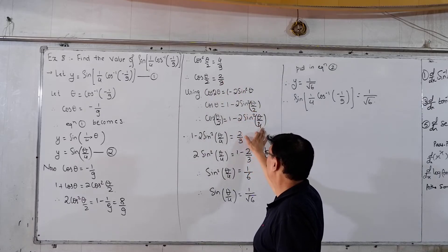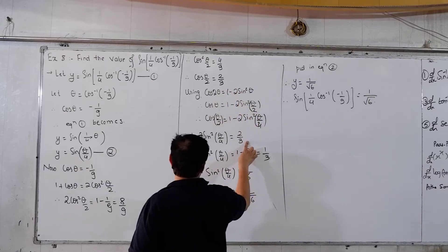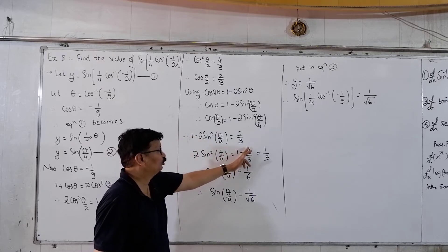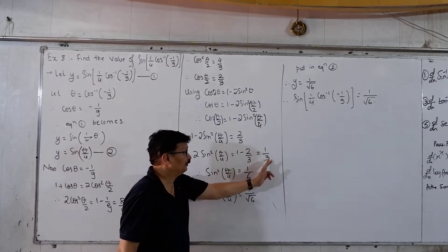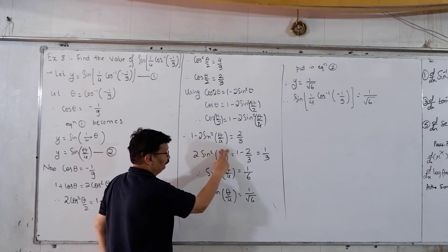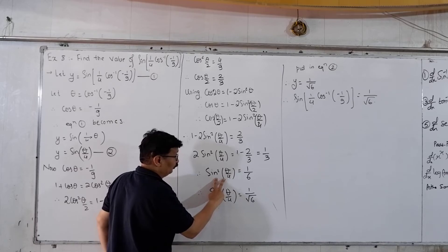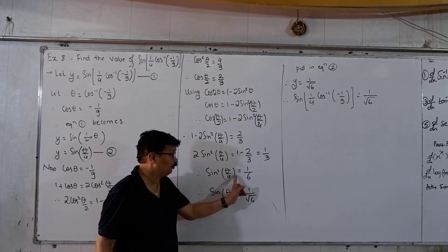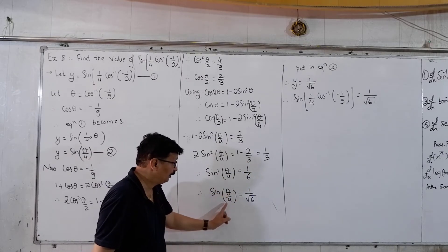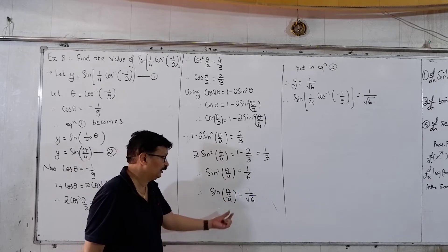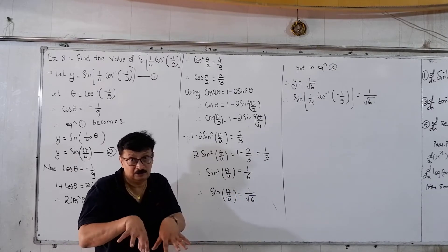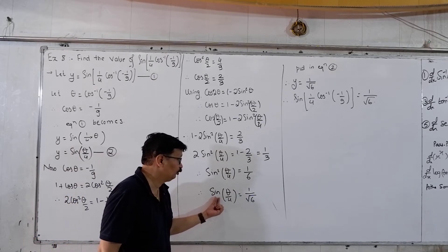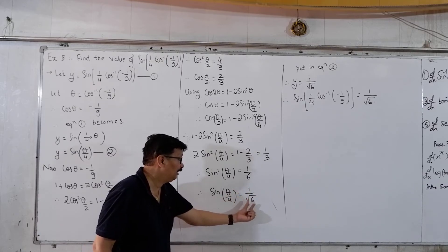From 1 − 2sin²(θ/4) = 2/3, we get 2sin²(θ/4) = 1 − 2/3 = 1/3, so sin²(θ/4) = 1/6. Therefore sin(θ/4) = 1/√6. No plus-or-minus, because θ/4 is in [0°, 45°] — the first quadrant — where sine is positive.